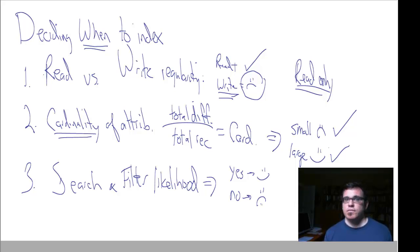So bottom line, read versus write. If you've got lots of reads, then index more. Cardinality of a given attribute that you're thinking about indexing, if it has a lot of different unique values relative to the total number of observations in the database, then that favors indexing. And finally, if people are planning on using that attribute to search or to filter, that weighs in favor of the attribute as well.